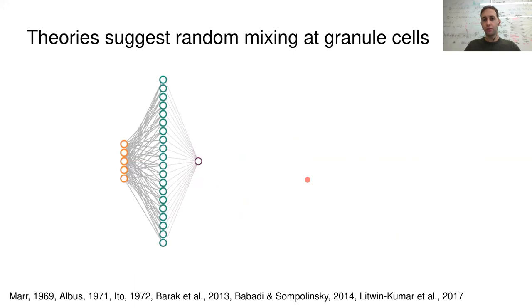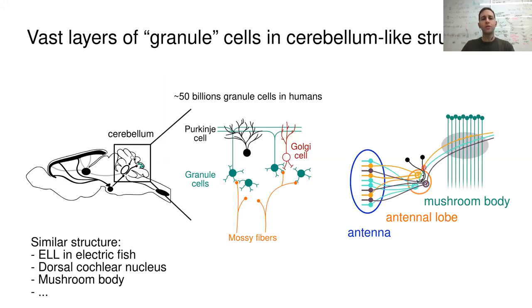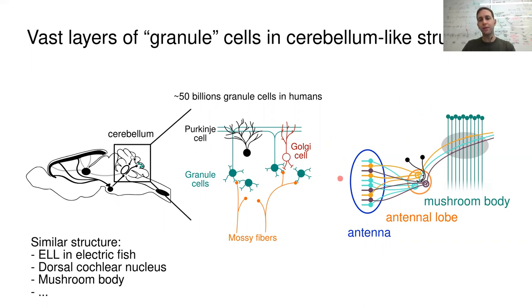Let me briefly introduce the mushroom body. In the insect olfactory system, neurons which sense odors in the antenna project down to the antenna lobe, from which neurons are sent to the mushroom body. The Kenyon cells are the analogous of the granule cells, forming a large layer relative to the size of the insect brain. I want to discuss this system also because more is known about the statistics of the input and the connectivity, and it might teach us something about the cerebellum itself.